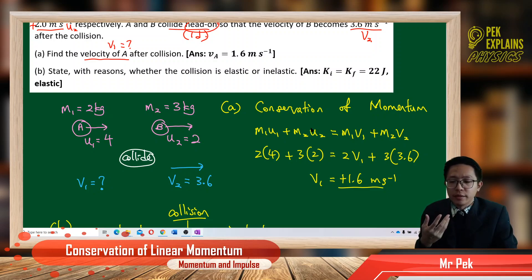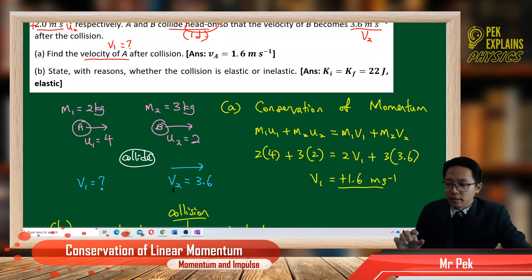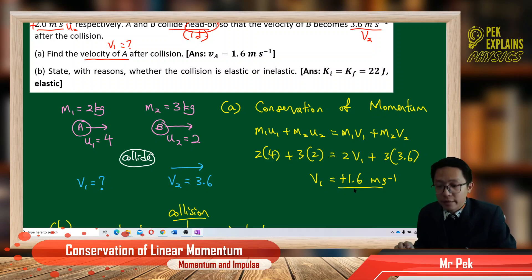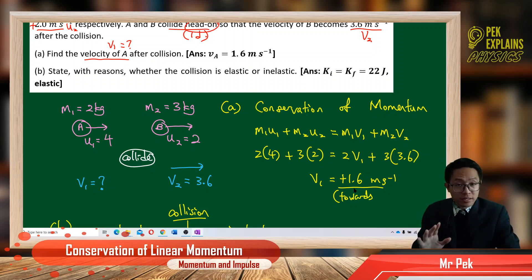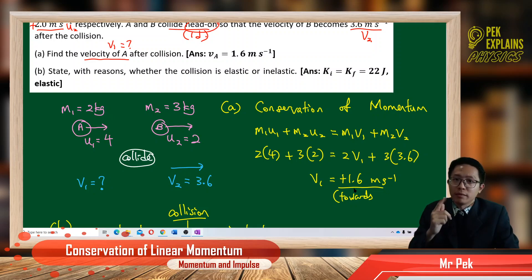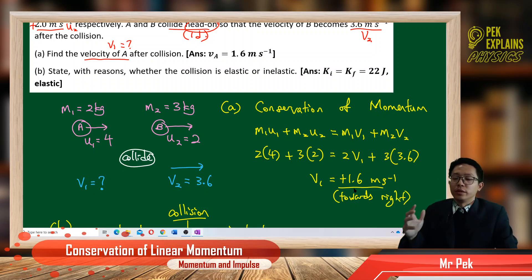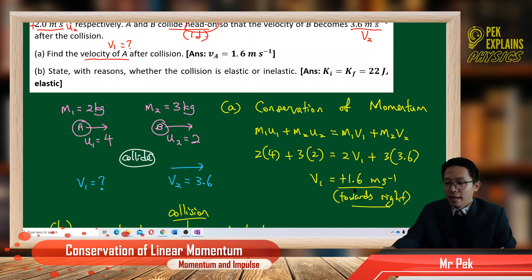The positive value tells us that ball A is moving to the right after collision. We must write the direction — for a vector quantity like velocity, you always have magnitude and direction. You must give the direction; if you don't give direction, you lose one mark. So a positive value means it is moving to the right after collision.